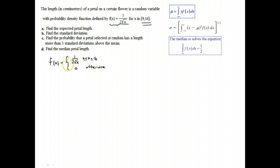After 16, it's back to 0; before 9, it's 0. Part A: find the expected value, the expected petal length. The expected value is the same as the mean, and the Greek letter that we use for that is mu.